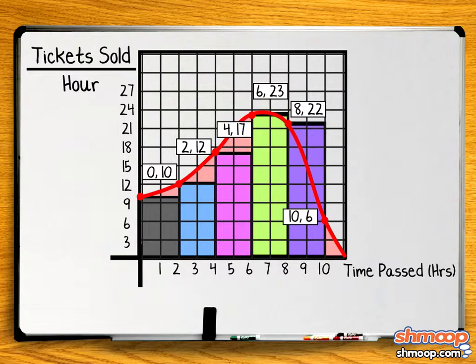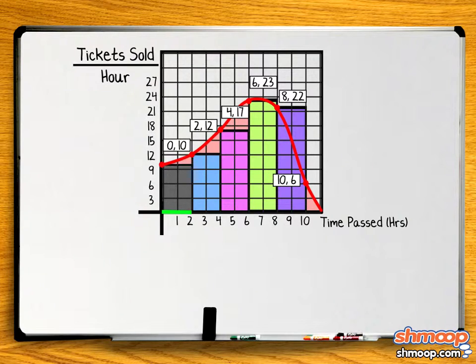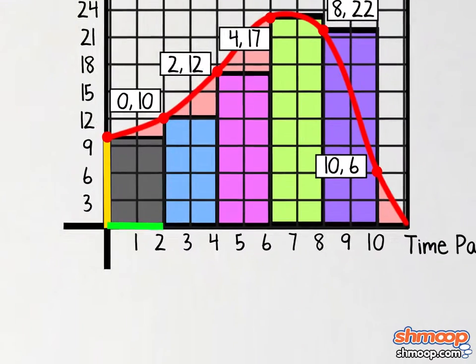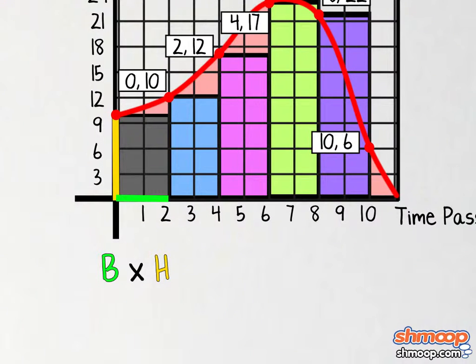When finding a left-hand sum, we need to know the value of the function at the left endpoint of each subinterval. Let's look at the first subinterval between hours zero and two, and calculate the area of the rectangle. We can see that the left endpoint of the subinterval is ten. We know from the good ol' pre-algebra days that the area of a rectangle is base times height. So we can calculate the area of a rectangle at the first subinterval by multiplying the base, or two, by the height, ten, to get twenty as the area of that first rectangle. Easy.